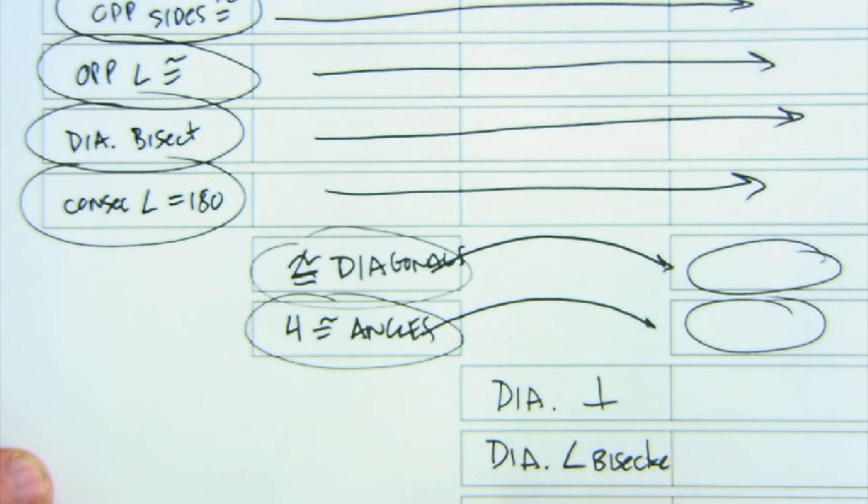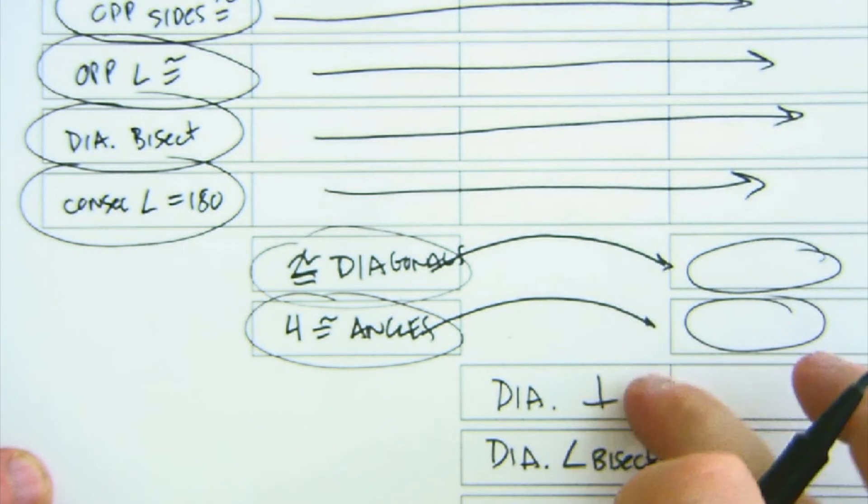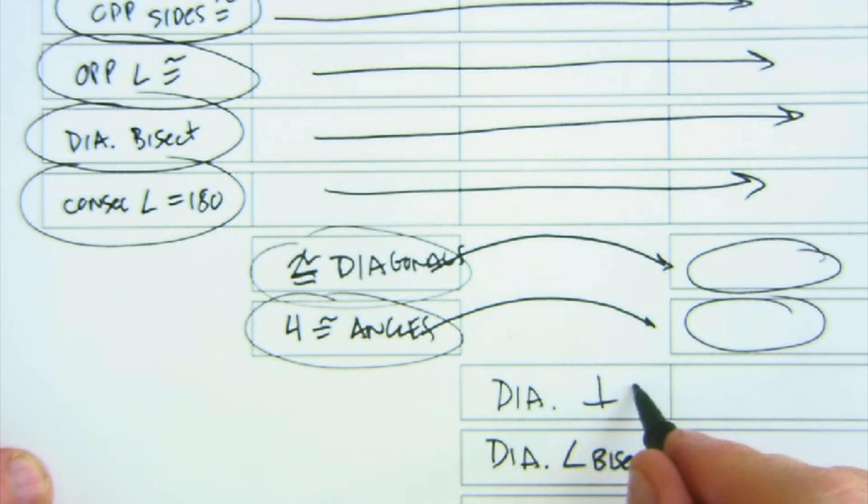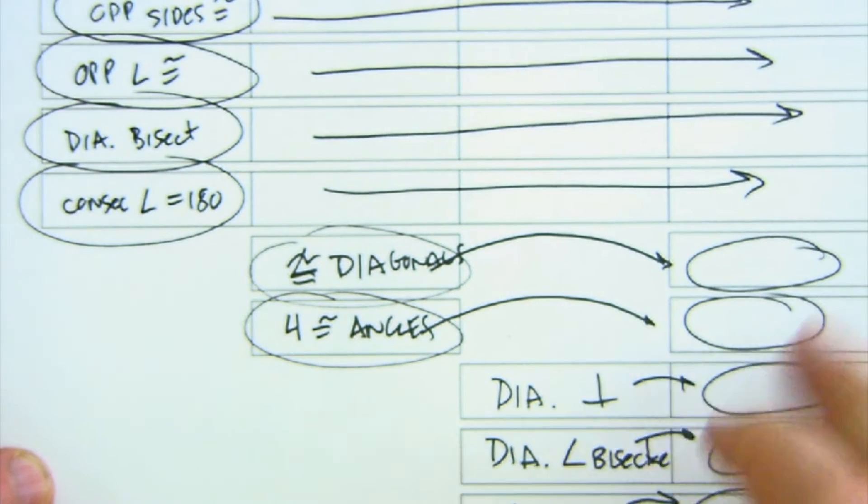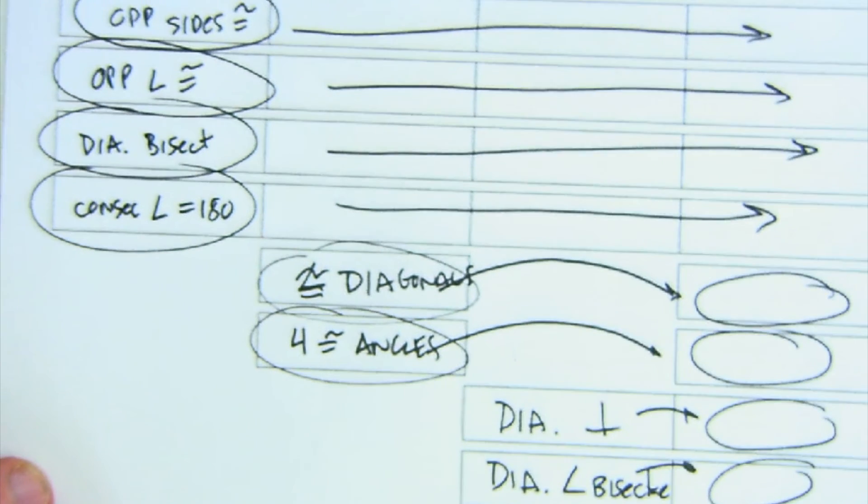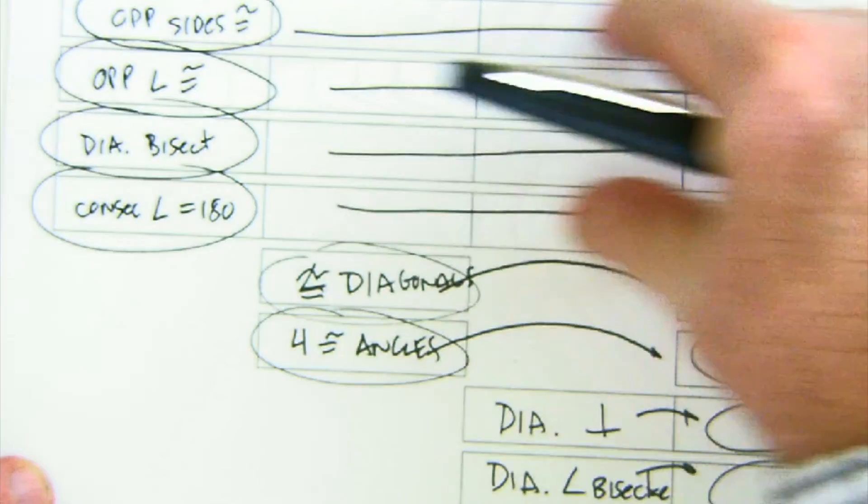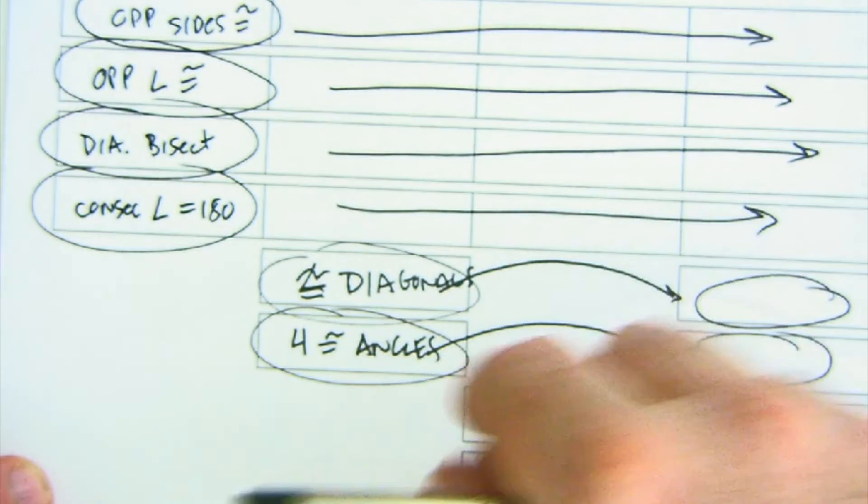And a rhombus by its definition has four congruent sides. Those are unique to the rhombus but exist in the square. So again, what I'm trying to help you to understand is that these properties can be easily remembered if you know how they relate to each other.